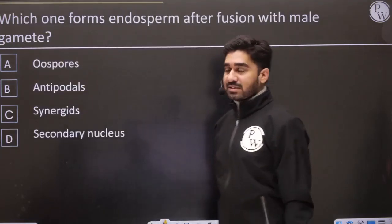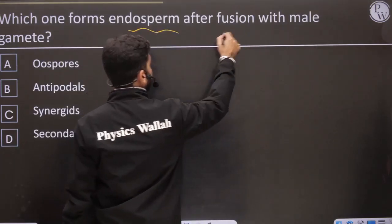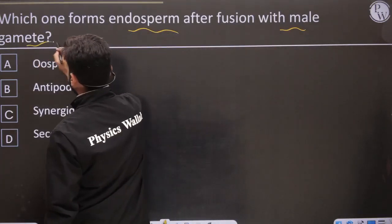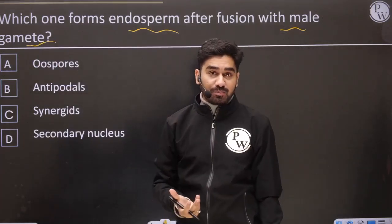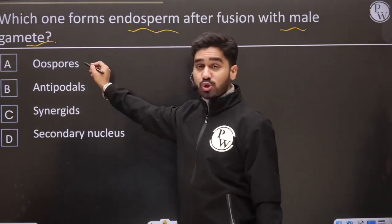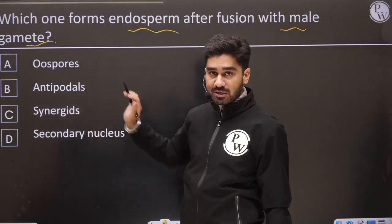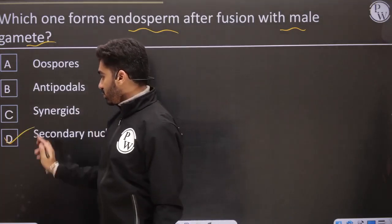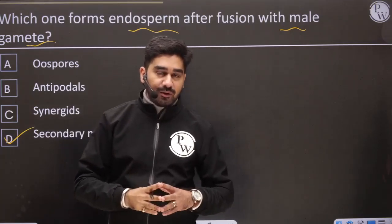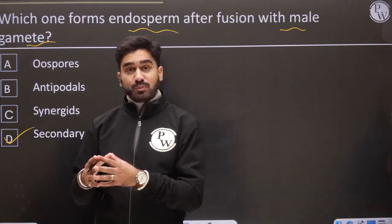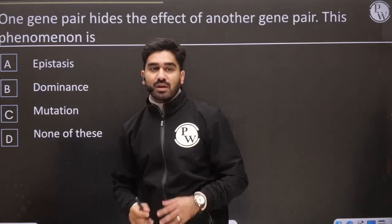Then next question: which one forms endosperm after fusion with the male gamete? O-spore is not present here. Antipodal cells don't work, synergids don't participate. So the answer is secondary nucleus. Secondary nucleus fuses with the male gamete, forming the primary endosperm nucleus and then the primary endosperm cell.